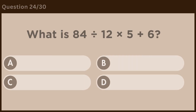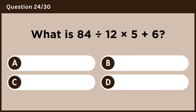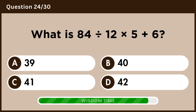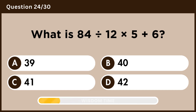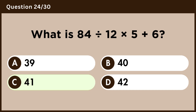What is 84 divided by 12 times 5 plus 6? Answer C, 41.